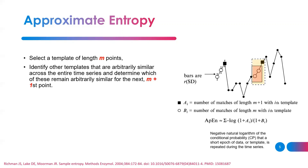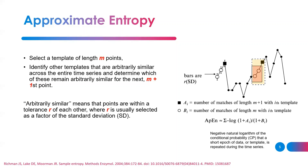If a signal is completely repeatable or regular — like a sine wave — and you look at a pattern made of M points, it repeats itself every period T. It doesn't matter if you have M points or M plus 1 points; the signal is still going to be repeatable. We pick two templates, one of size M and one of size M plus 1, to build a probability measure and see how repeatable that measure is.